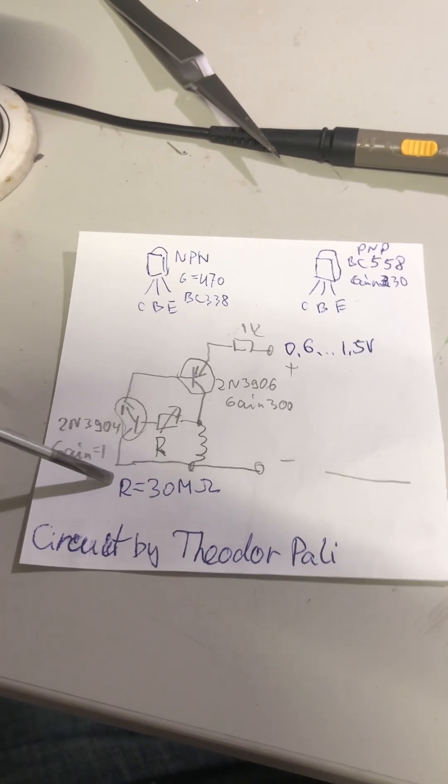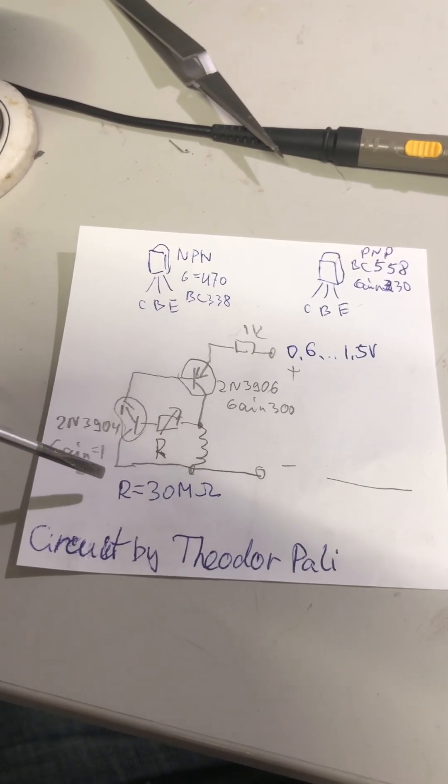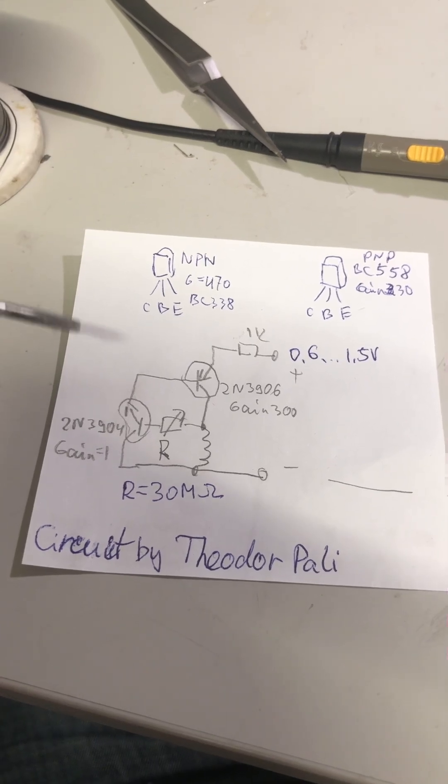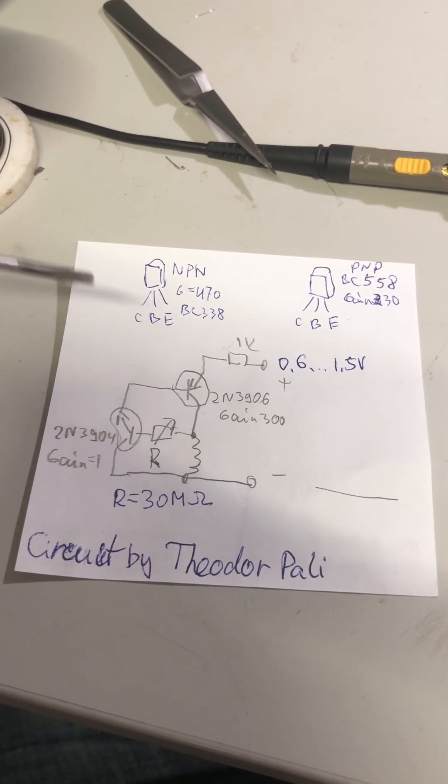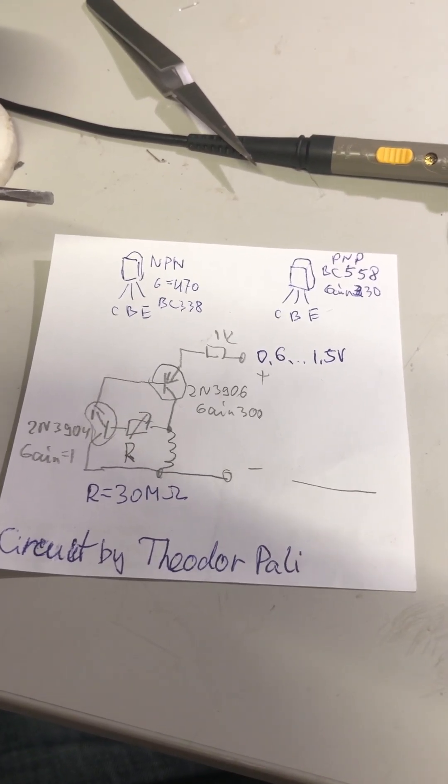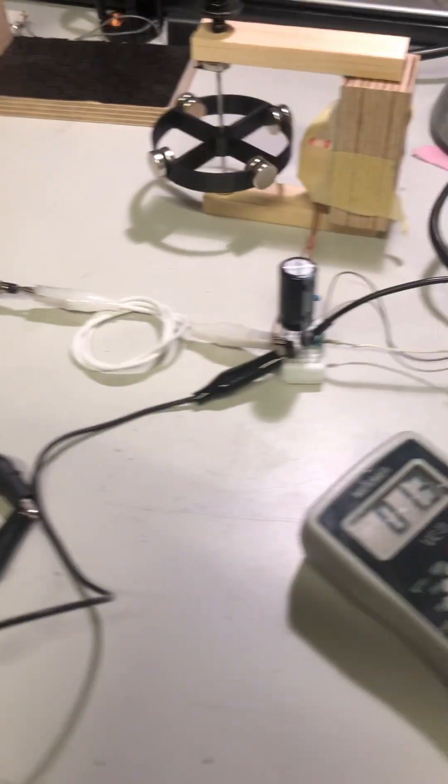It has very huge resistor, 30 mega ohms or maybe 50-60 and a high resistance coil and can get down to one micro watt of current.